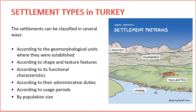1. Geomorphological Units. Settlements can be categorized based on the geomorphological units where they were established, considering the natural landscape and formations as a key determinant of settlement locations. 2. Shape and Texture Features. Another classification is based on the shape and texture features of settlements, involving analysis of the physical characteristics and layout of structures within a settlement.